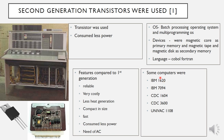Features of second generation computers compared to first generation: more reliable, still very costly, less heat generation, compact in size, faster, needed less power, but still needed AC continuously. Some examples were IBM 1620, IBM 1794, CDC 1604, CDC 3600, and UNIVAC 1108.